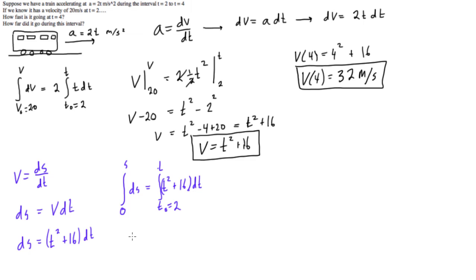So we'll proceed with our integration. The integral of ds is just equal to s from 0 to s. This is equal to, well, the integral of t squared is going to be one-third t cubed. This will be plus 16t. And this whole expression here goes from 2 to t. So we'll keep going.